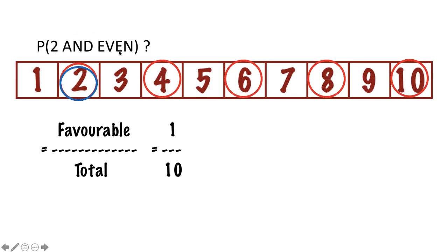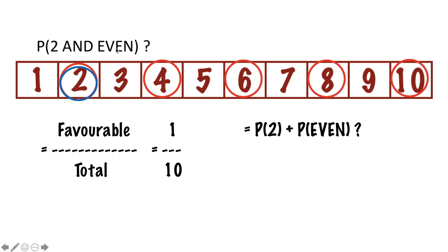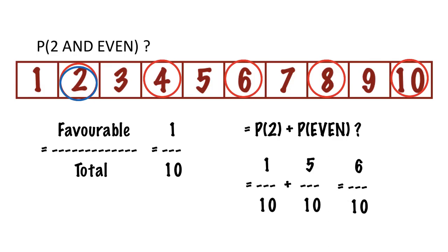So my answer is one out of ten. And once again, if you think AND sounds like plus — the way it does in algebra — and try to add the probability of getting two (one out of ten) plus the probability of getting even (five out of ten), you'd get the wrong answer. You can't do that. If it's an AND, you've got to see which outcomes satisfy both conditions — which ones get both circles — and that gives your correct answer of one out of ten.